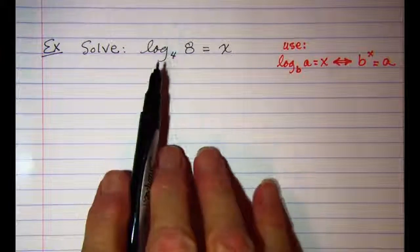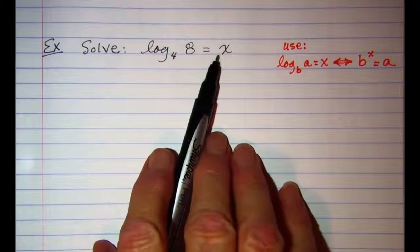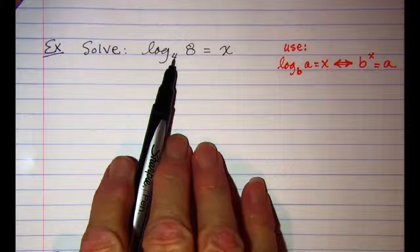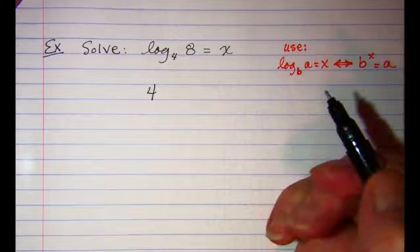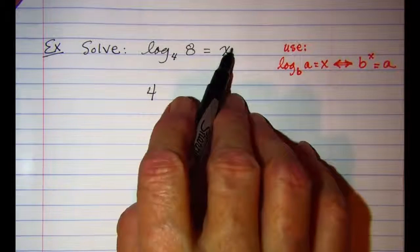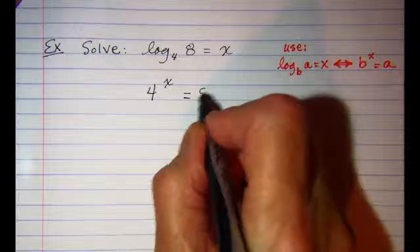Our problem is log base 4 of 8 equals x. I'm going to use this rule. The base of my logarithm is 4, so the base of my exponential is 4. A logarithm is an exponent, so my exponent is x, and then that's equal to 8.